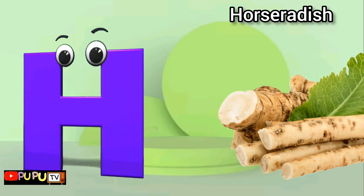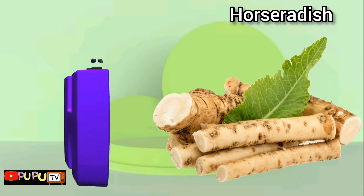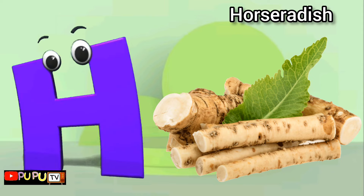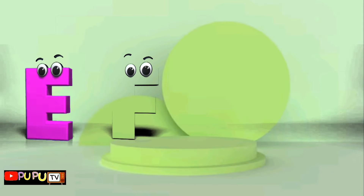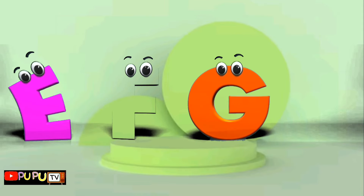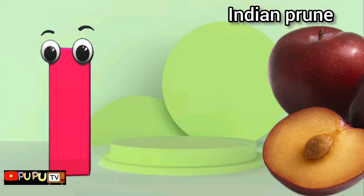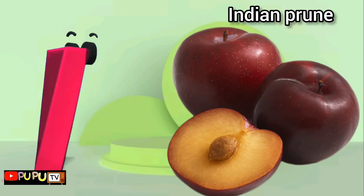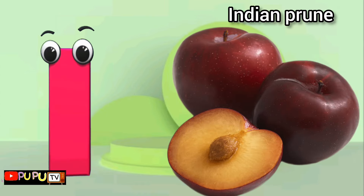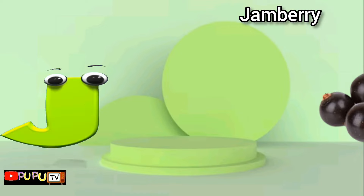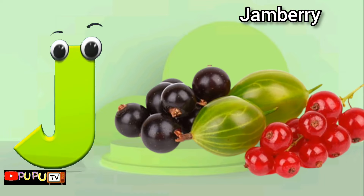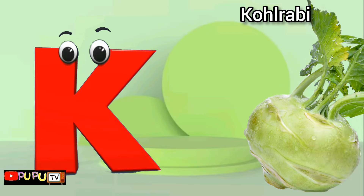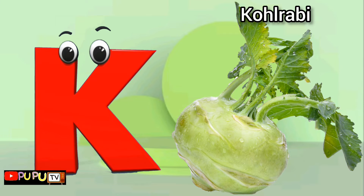H is for horseradish, horseradish. I is for Indian prune, Indian prune. J is for jamberry, jamberry. K is for kohlrabi.